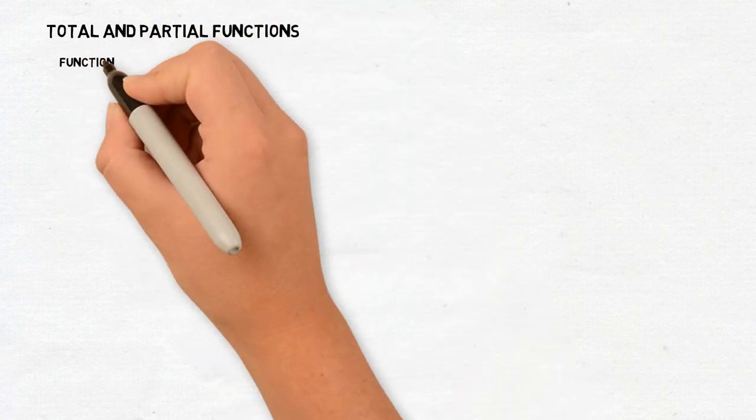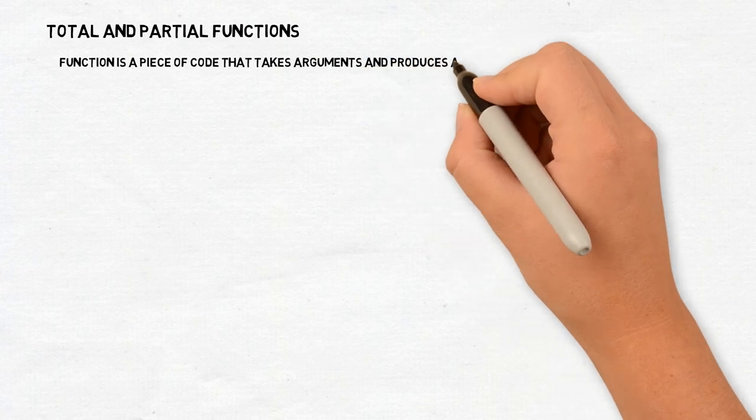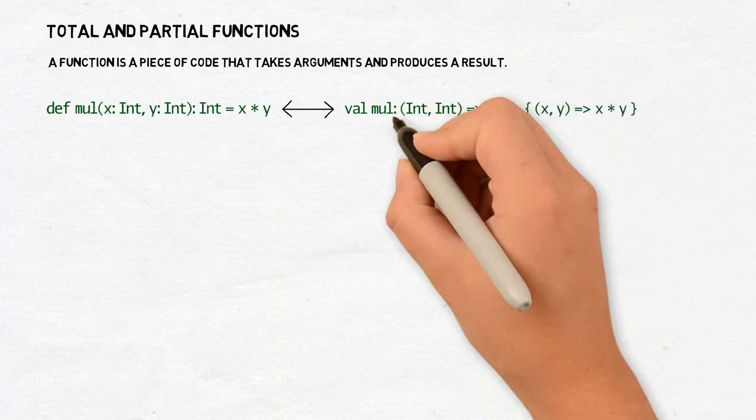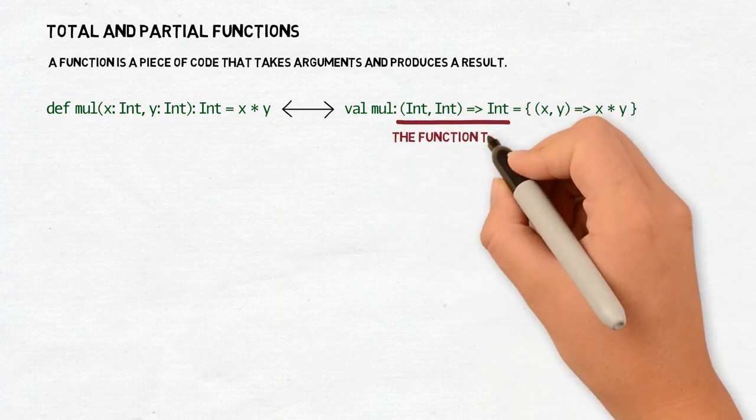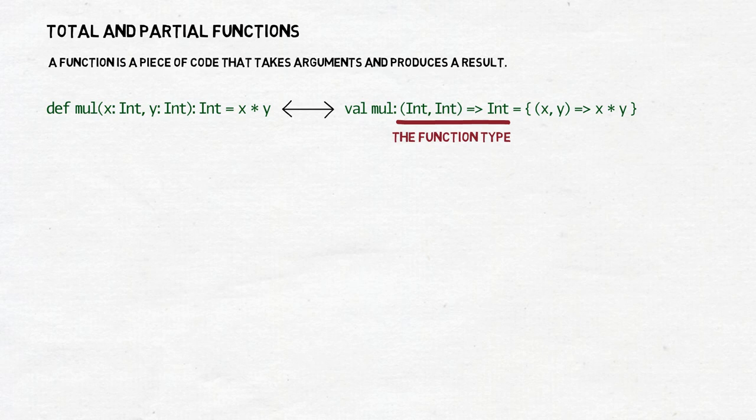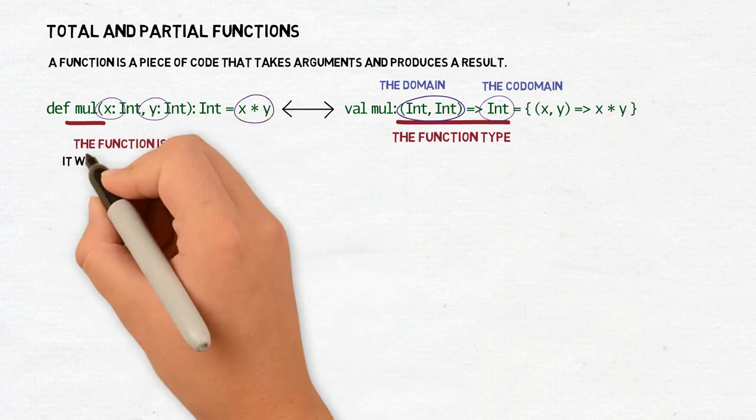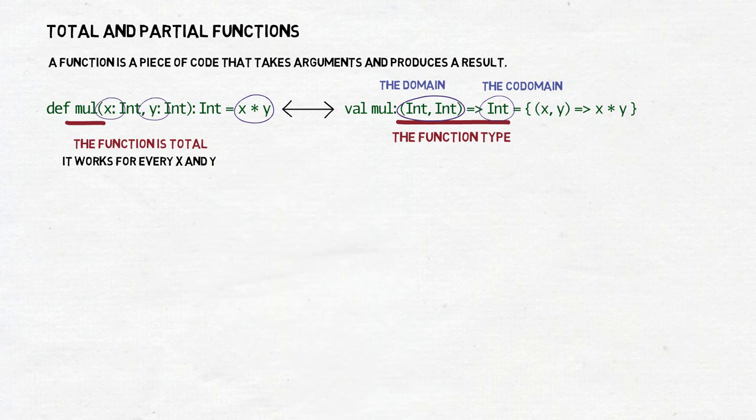A function is a piece of code that takes arguments and produces a result. When we talk about total and partial functions, it means that we are interested in the type of the argument and whether we can produce a result from it. Or we can say that we are interested in the function's domain and the codomain. So let's say we have a function mul which performs the multiplication. It takes two integers, x and y, and produces a third integer, the result of multiplying x and y. Our multiplication function is total. You can provide any two integers to it and you will obtain a result of the declared type, int, as well.